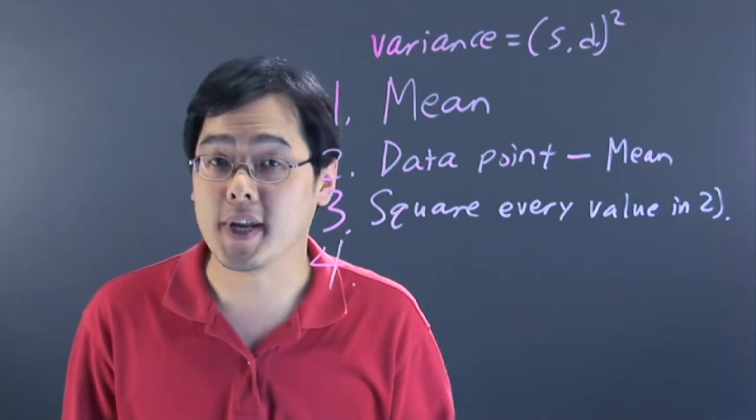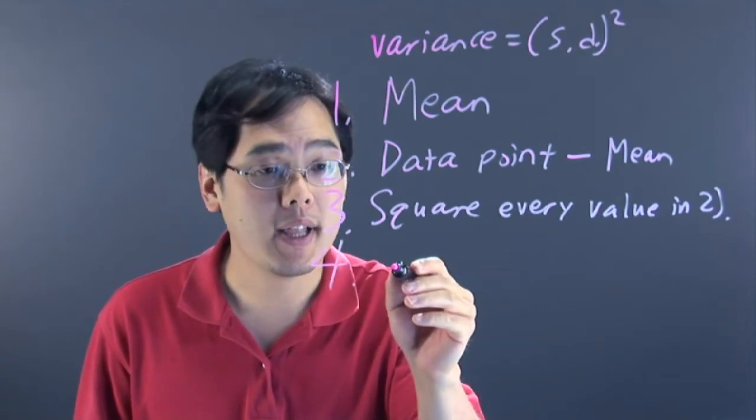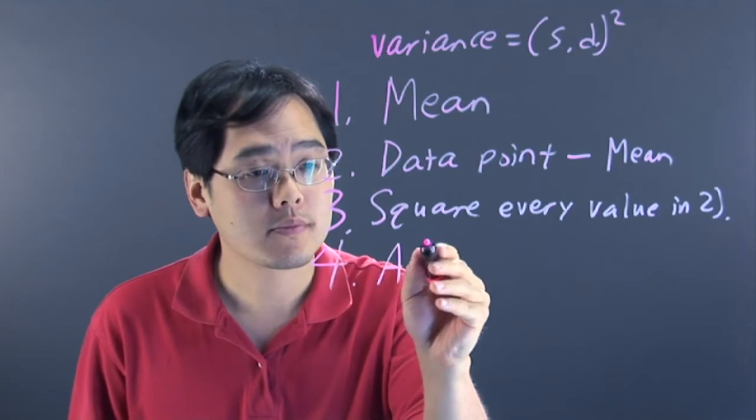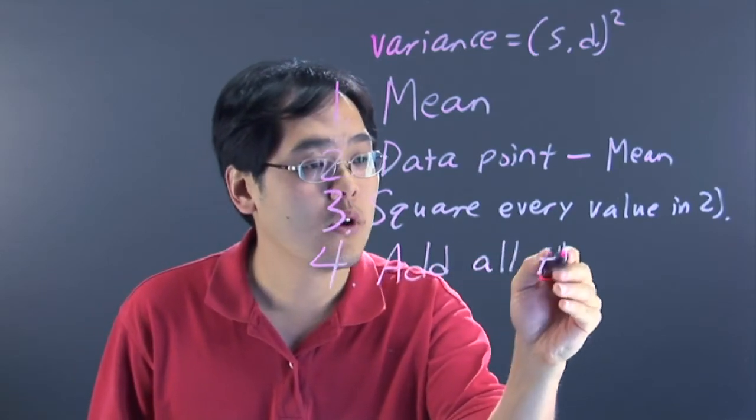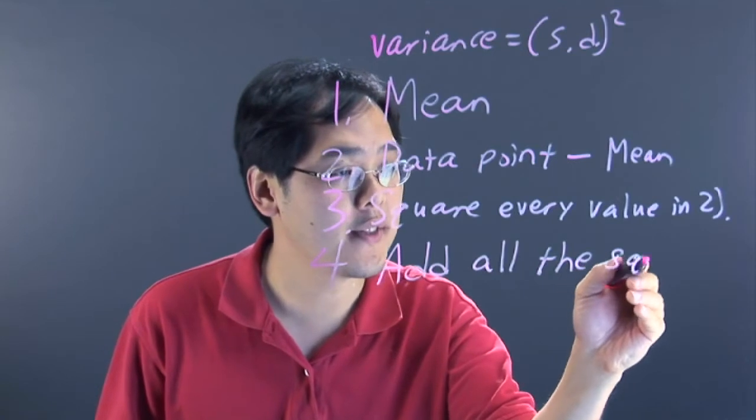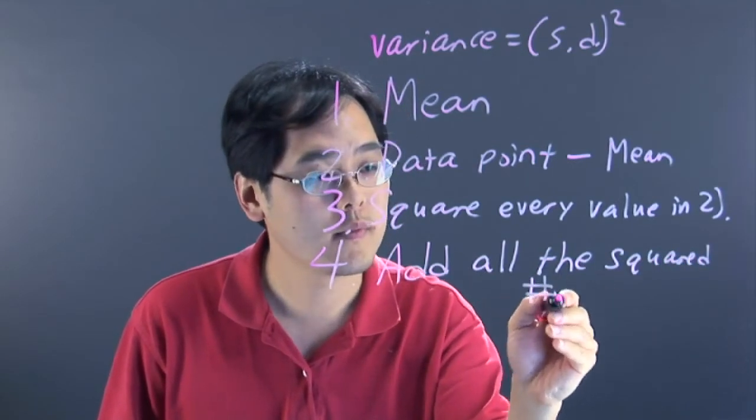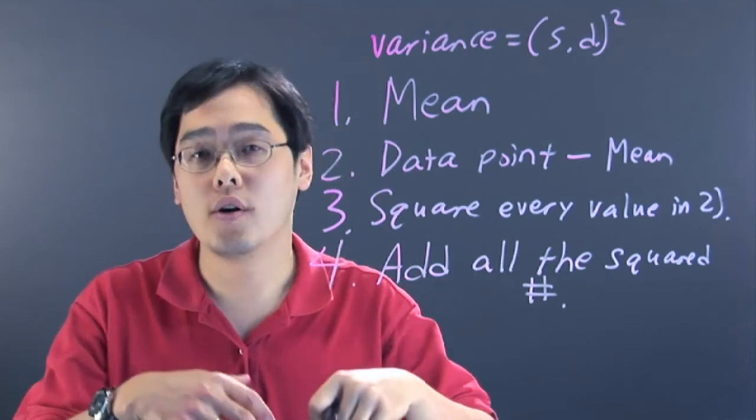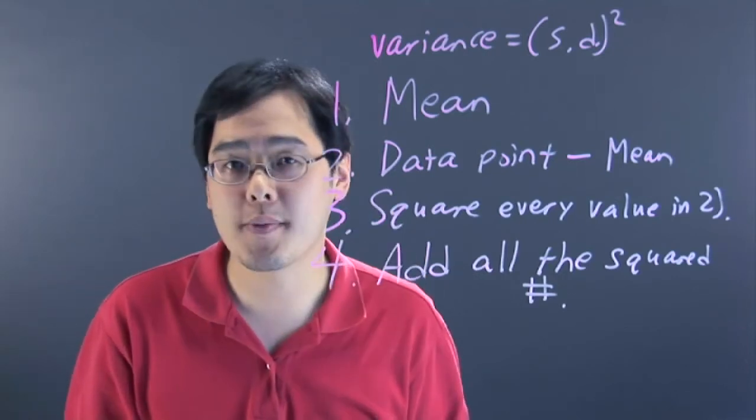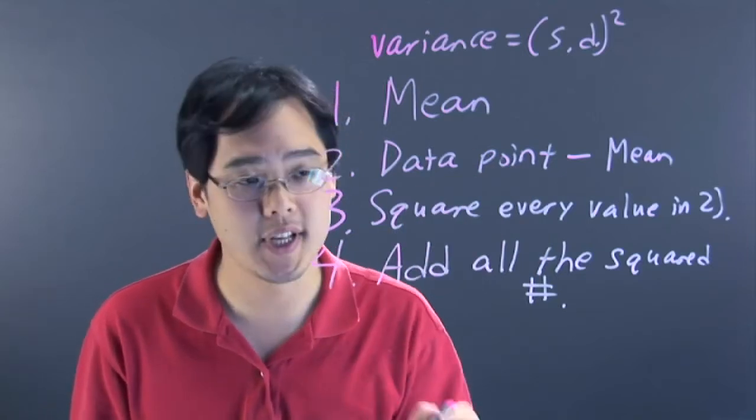But your fourth step here is going to be a lot easier. You want to add all the squared numbers together. Remember, all the numbers you should find in step 3 are going to be positive, so you're going to add all these positive numbers together.